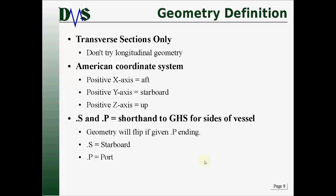You can also use a .C extension, which stands for centerline. GHS will take the object and mirror it to both sides of the vessel — that's really handy for a hull, for example, so that you only have to define half of your hull shape.